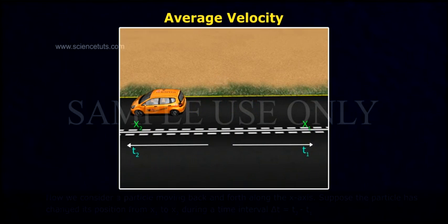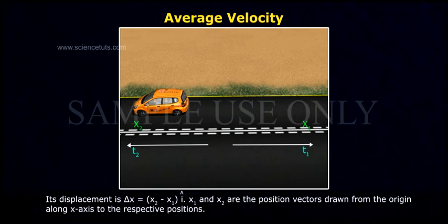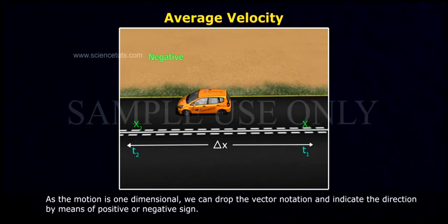Its displacement is delta x equals x2 minus x1 into i-cap, where x1 and x2 are the position vectors drawn from the origin along x-axis to the respective positions. As the motion is one-dimensional,